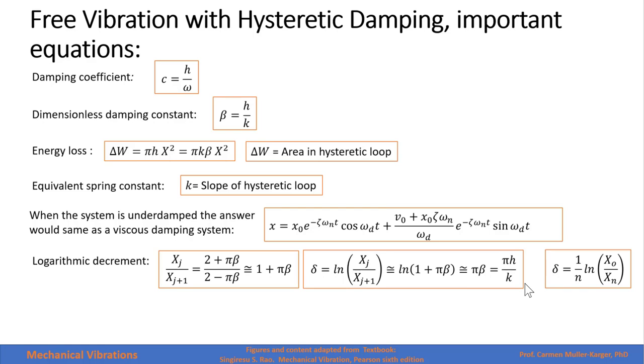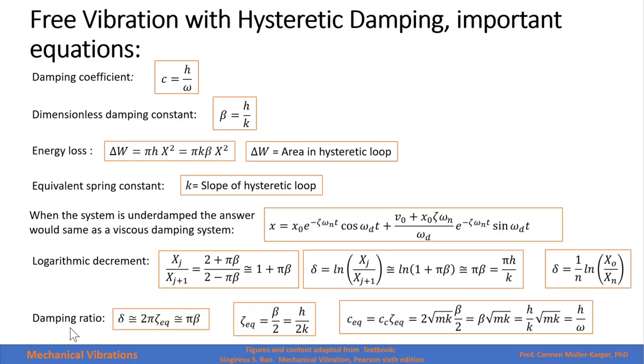And if we take more than one cycle, for example, 0 to n, we have to divide this expression by n to get the logarithmic decrement.